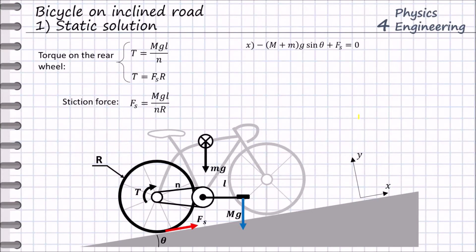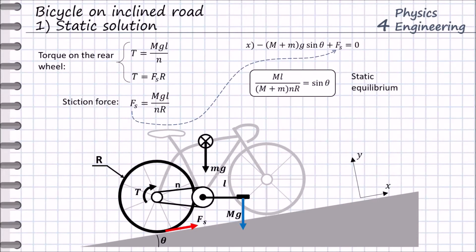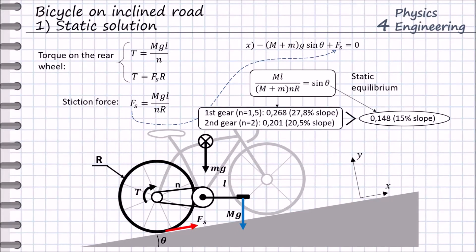We write the projection of all the forces in the x direction. We can now substitute the stiction force into the equation, and therefore we get the equation for the static equilibrium. Considering the masses of the cyclist and the bike, we obtain the following solution. On the first gear, the cyclist will be able to hold the bike on a 27.8% slope, and for the second gear this is a 20.5% slope.